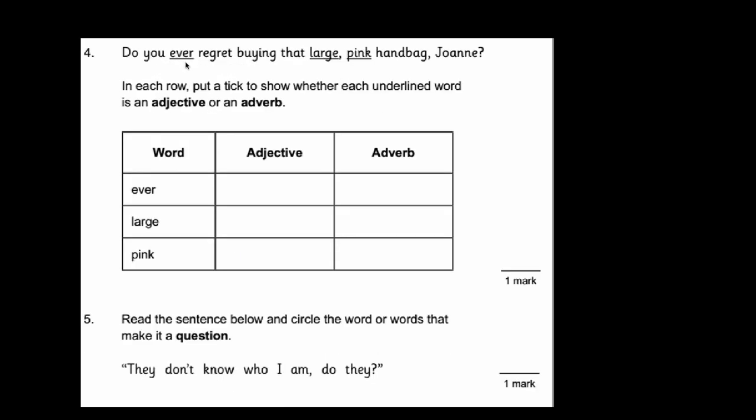Number 4. Do you ever regret buying that large pink handbag Joanne? In each row put a tick to show whether each underlined word is an adjective or an adverb. Well thinking about an adjective, an adjective is a description word. It gives us extra information about a noun. You can see the noun here: handbag. These are the two words that are describing the handbag. So these are the two adjectives. So we've got large and pink. Now 'ever' is giving us a time. That's not really describing a noun so it's definitely not an adjective but it is an adverb. So that's the correct answer for that question.